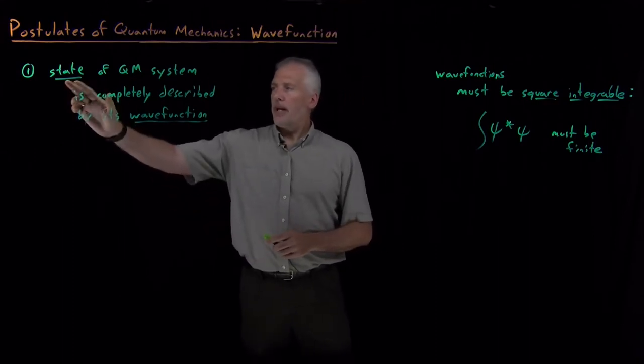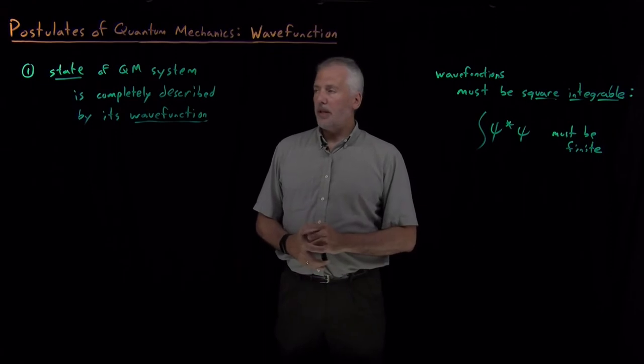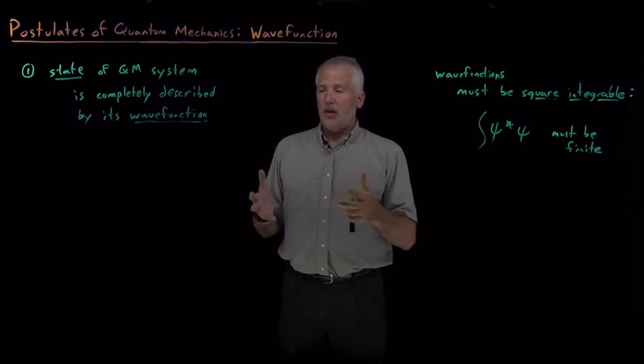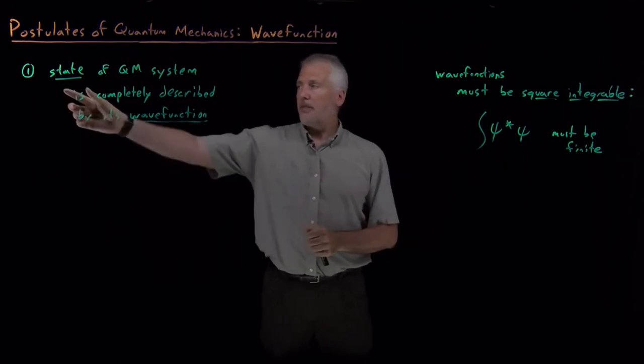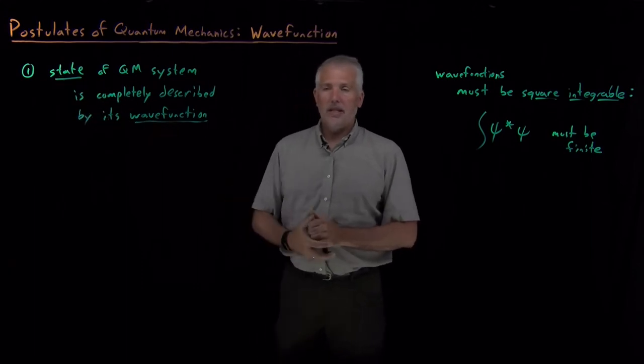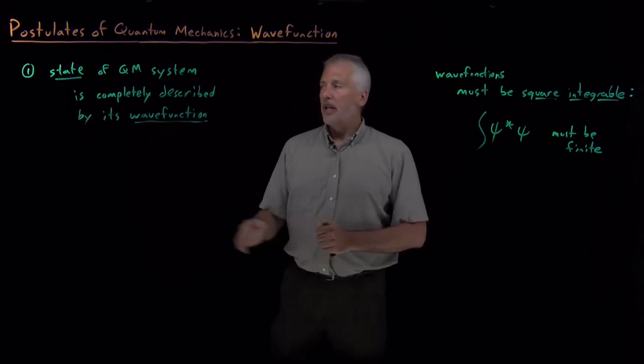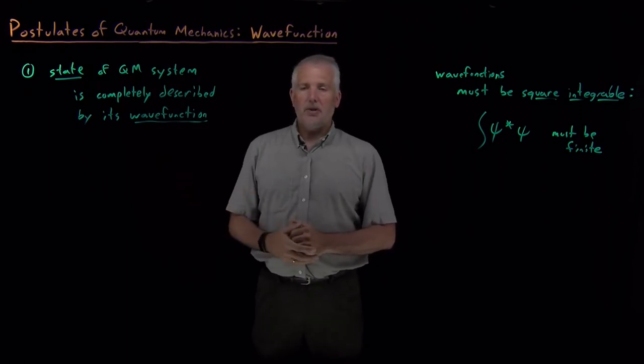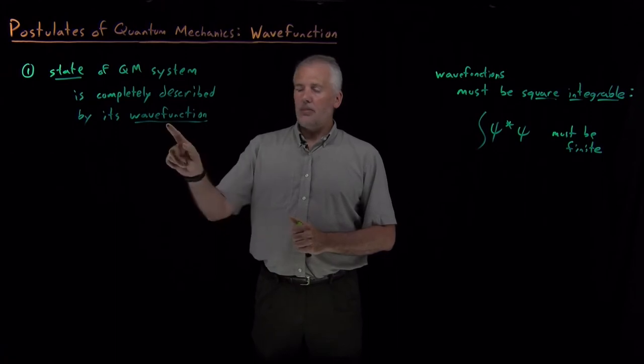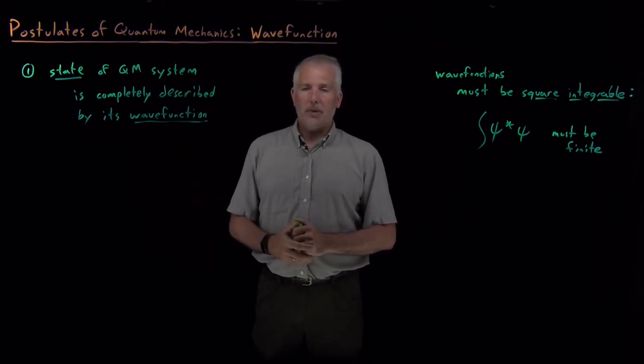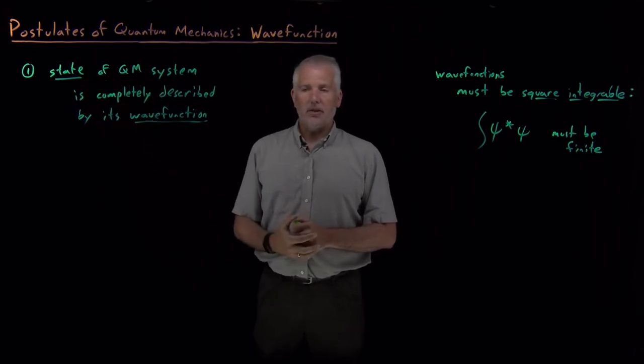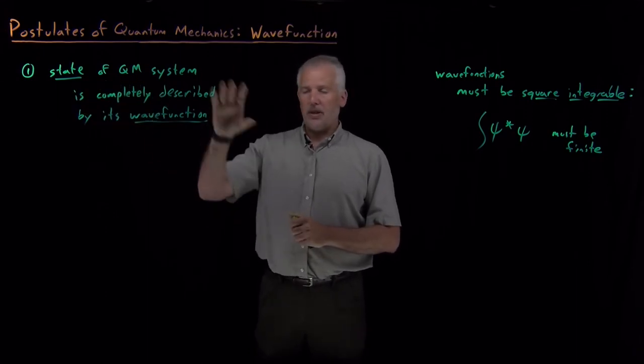By state of the system, I mean the same as if I were to describe the state of a problem when we were doing lattice models. If I describe all the properties of the system, I've given you all the details—I've described the state completely. What this postulate tells us is that anything possible to know about a quantum mechanical system, I can obtain from its wave function. If I know the wave function, there's a way of extracting information to describe everything about the system.